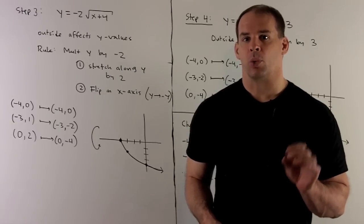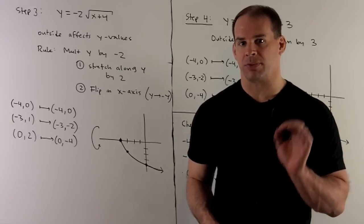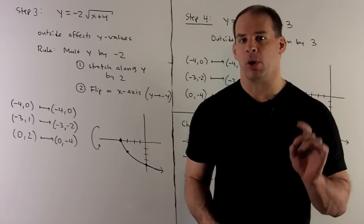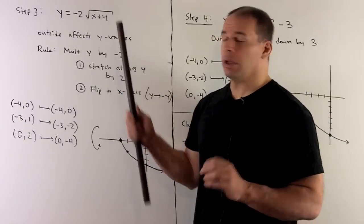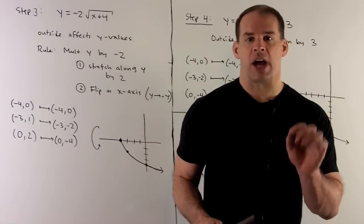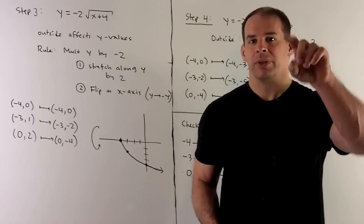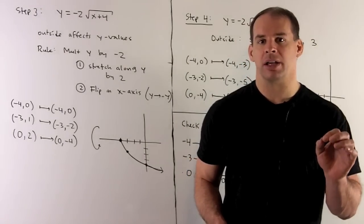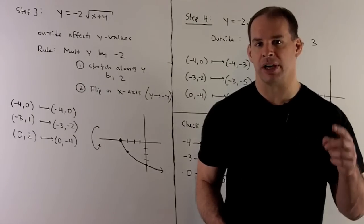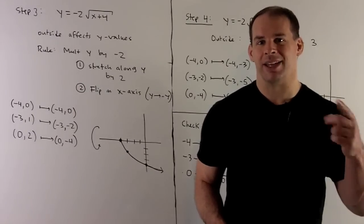Next step, we're on the outside of the square root of x plus 4 now. So we're affecting y values. If I multiply by a minus 2, we affect y values. What's the geometry? Well, we're going to stretch along y by 2, and then multiplying by a minus 1 is going to change positive y values to negative y values, and vice versa. So you're going to flip in the x-axis.